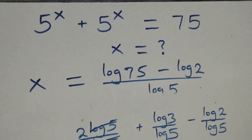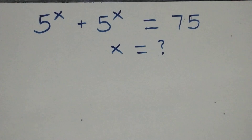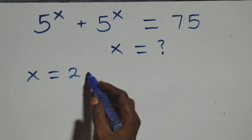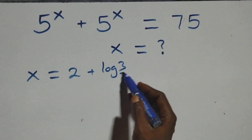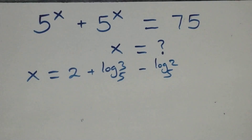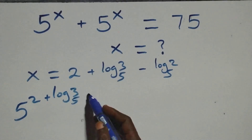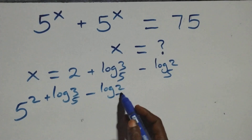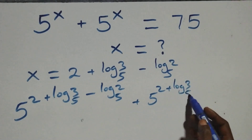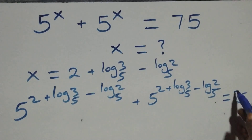We substitute the value x equals 2 plus log₅3 minus log₅2 back into the original equation. This gives us 5 raised to power (2 + log₅3 − log₅2) plus 5 raised to power (2 + log₅3 − log₅2), and we check whether this equals 75.